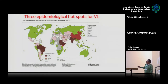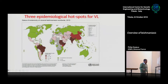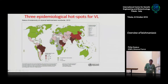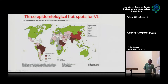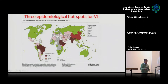The two main hotspots are East Africa and the Indian subcontinent — India, Nepal, Bangladesh, and a little of Pakistan. Africa includes Kenya, Sudan, Somalia, and Uganda. Somalia is unfortunately increasing sharply because of the civil war. There's a very close relationship: when you disturb the control system, of course the disease goes up quickly.